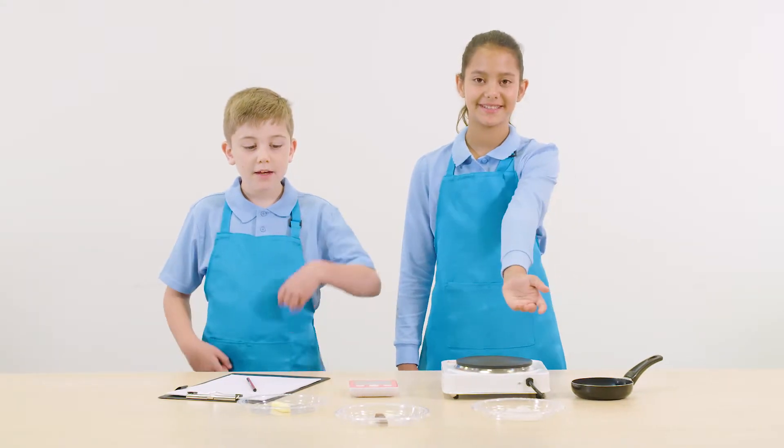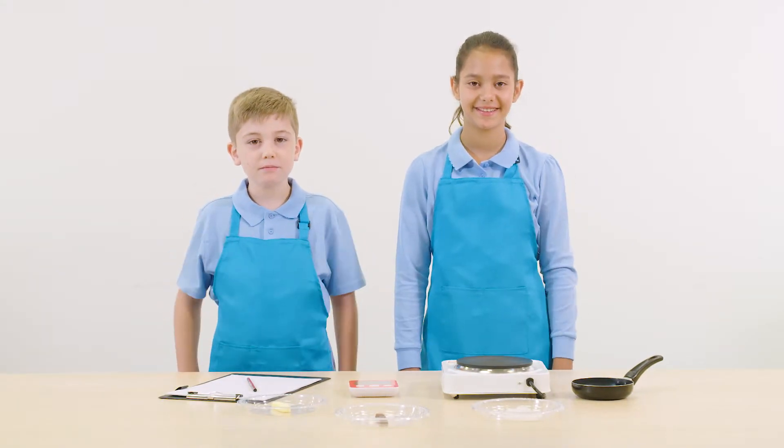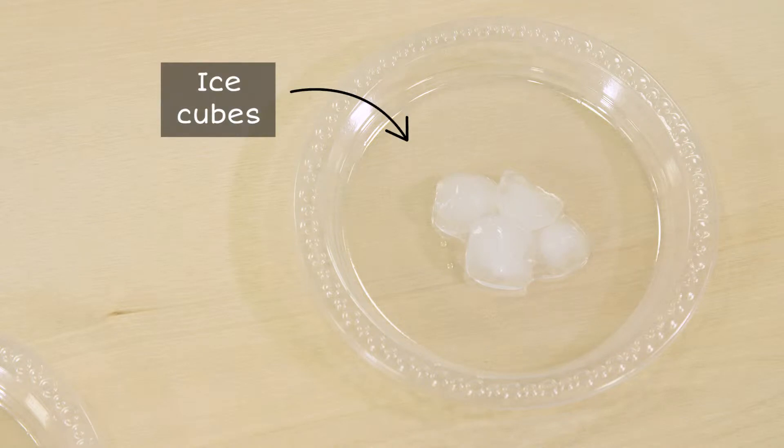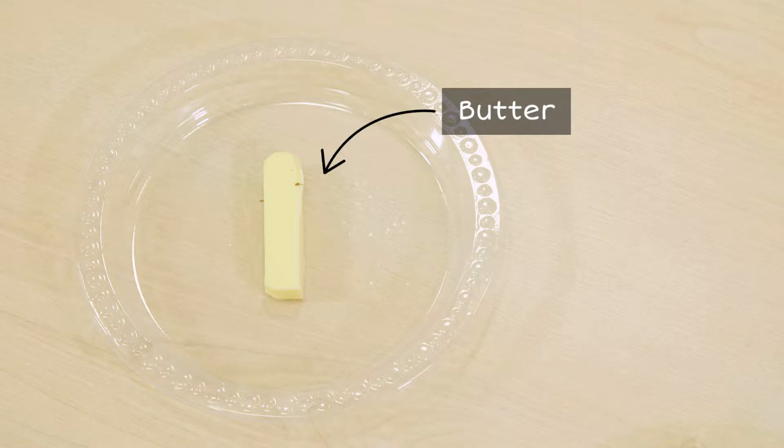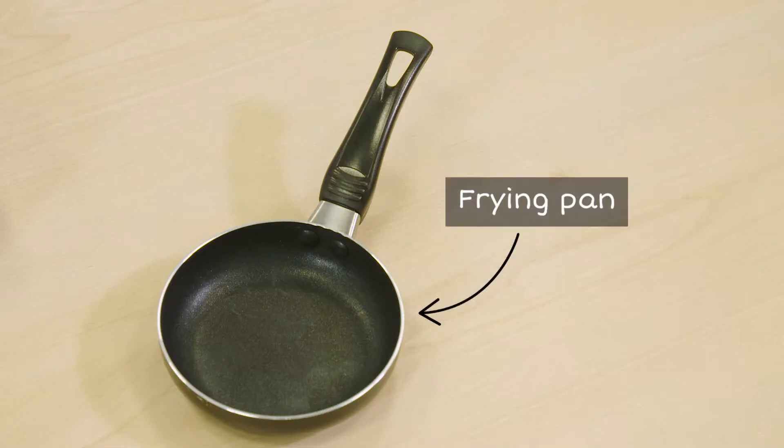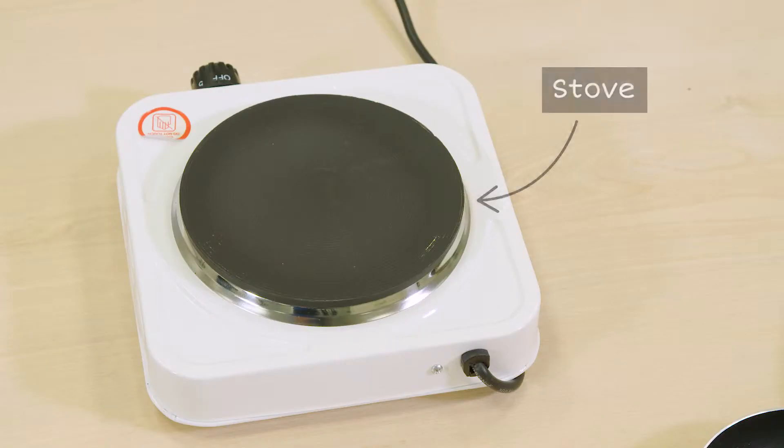Here are some ice cubes. Here are some chocolate and butter. These are all solids. Our investigators are going to heat each solid and see how long it takes to melt and change into a liquid.